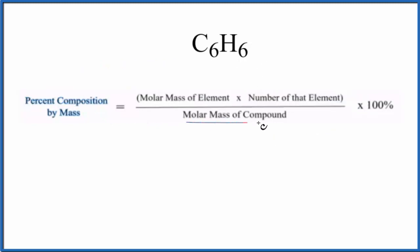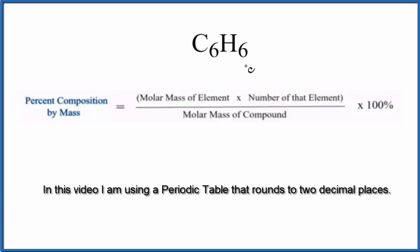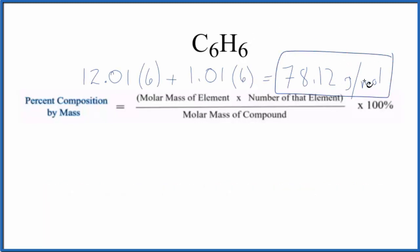We need to figure out the molar mass for the entire compound here. When we find the molar mass for C6H6, this is what we end up with: the molar mass is 78.12 grams per mole.